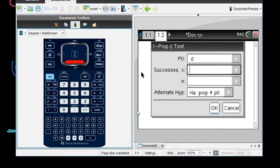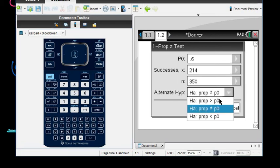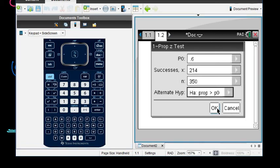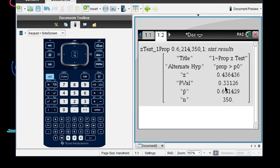For this one, it told us that there were 214 who agreed. The N is 350. And for this one, remember that we were doing, we always look at the alternative hypothesis and the alternative hypothesis was greater. So we would select greater. And when it runs it, it gives us our Z is 0.436.